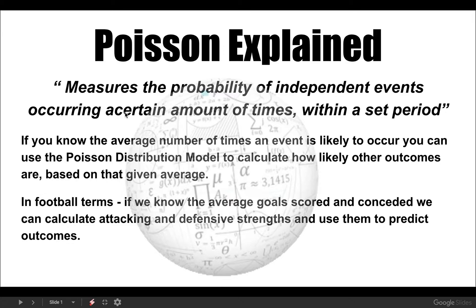It all sounds like a lot of waffle for anybody who's not that into mathematical modeling. In football terms, if we know the average goals scored and conceded, we can then use them to calculate defensive and attacking strengths of teams and then multiply those together to come out with some sort of match outcome or expected number of goals in a given game. I find it extremely interesting and it's aided me quite a lot in my betting, so I thought we could have a quick look at it with an updated view from my last video.